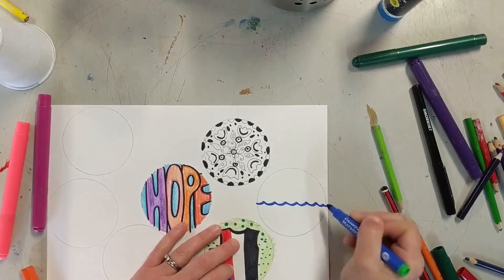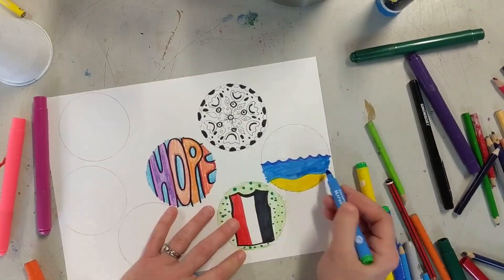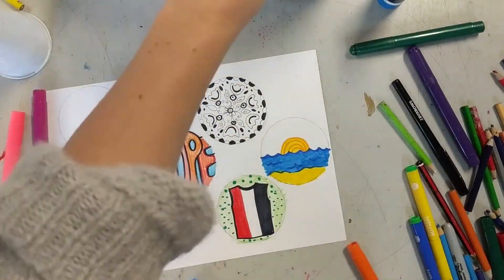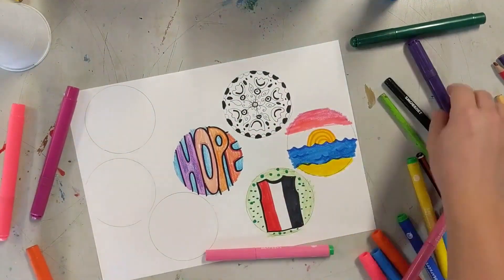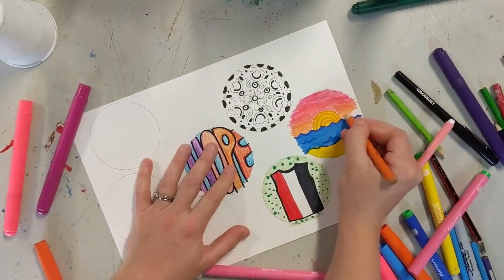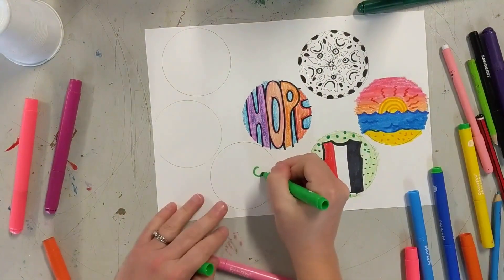Next I am decorating my next dot with somewhere I would rather be. Of course I'd love to be at the beach so I'm doing a sunset and I'm coloring the whole thing in using textas. Don't forget to add some more dots where you can.